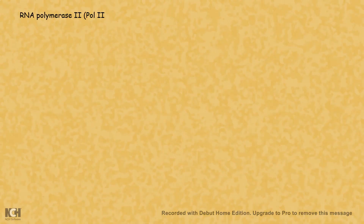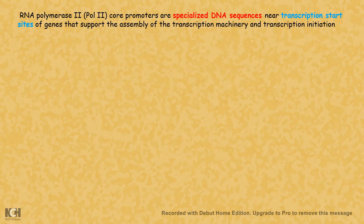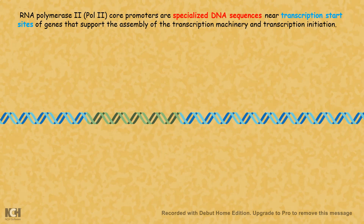In this video we'll talk about the promoter elements. RNA polymerase promoters are specialized DNA sequences located near the transcription start site, whose sole goal is to serve as a platform such that the transcription machinery can assemble there and transcription can begin.